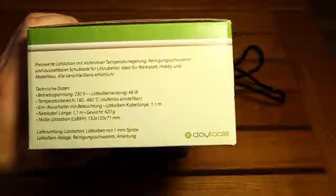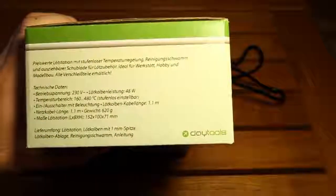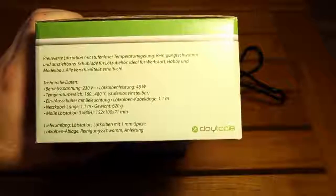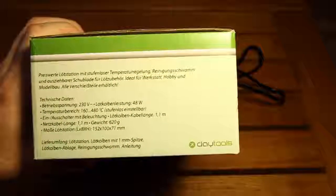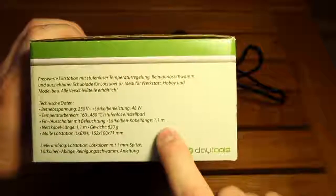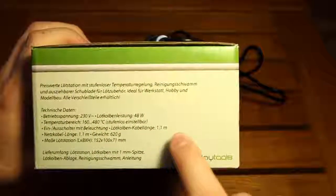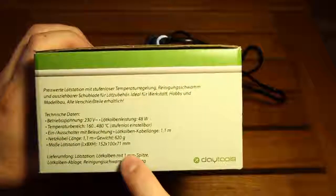Let's take a look at the facts and figures of the soldering station. It's supposed to be for 230 volts, rated power of 48 watts, and the temperature range from 160 to 480 degrees. The cable length is 1.1 meter and the dimensions are like 15 by 10 by 7 centimeters.